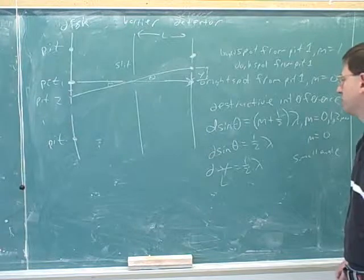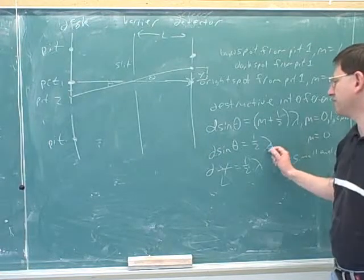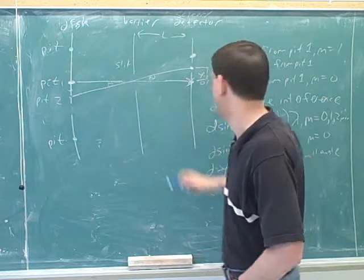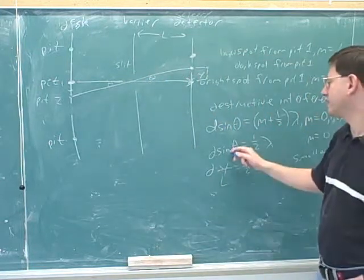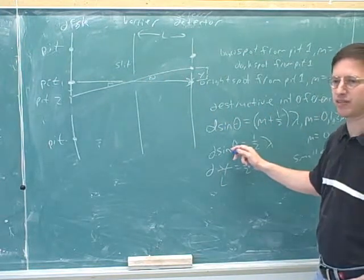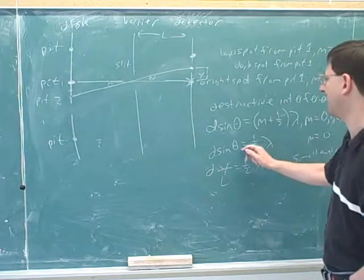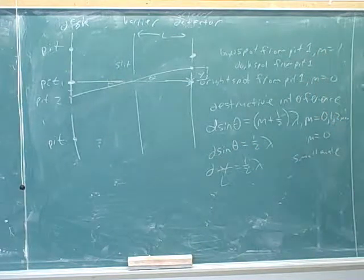If you want to know how much information you can crunch in, you would plug in your lambda, and you would plug in D. Remember, D is the width of the slit over here. And then that would tell you how big theta is over here. So this puts a lower limit on how close the pits can be.